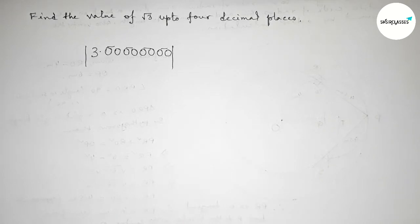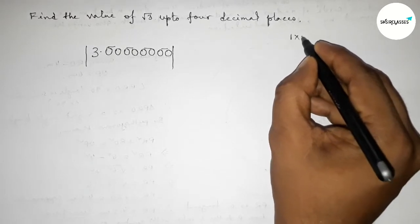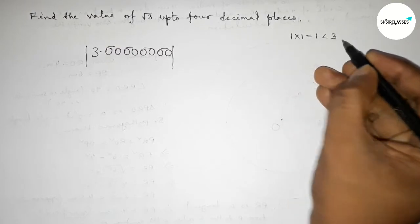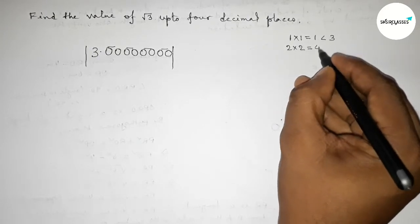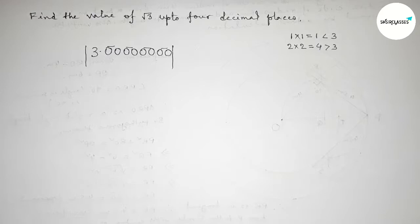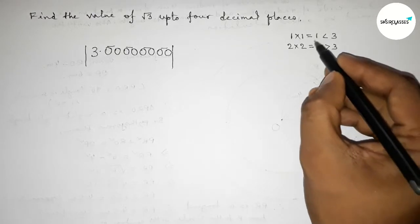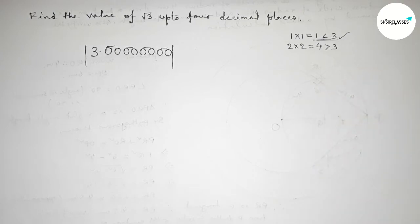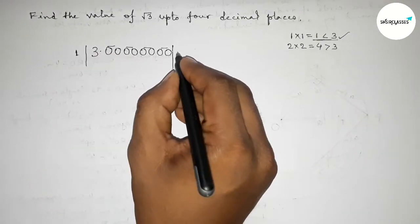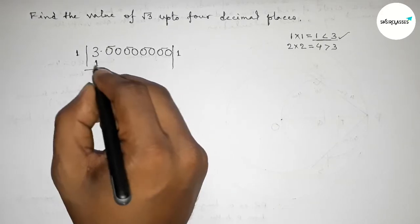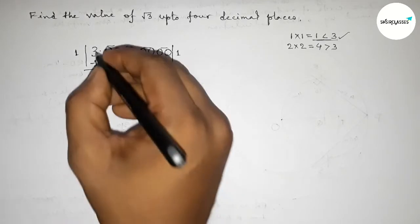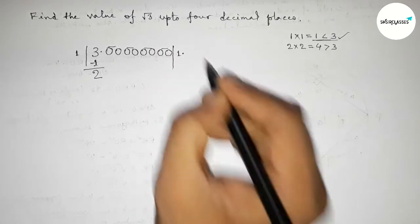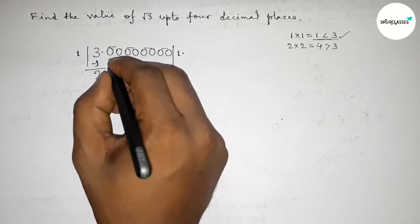Next, take a number and multiply it by itself. If you put 1 and multiply by 1, this is less than 3. If you put 2 and multiply by 2, that gives 4 which is greater than 3. So we take 1, since 1 is less than 3 and almost near to 3. We write 1, and subtracting 1 from 3 gives remainder 2. Now bring down the first pair of zeros.